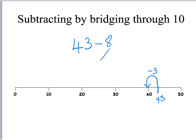So now I'm partitioning the 8. I've taken off 3. 8 partitions into 3 and 5. So there's another 5 I have to subtract from that, and 5 away from 40.